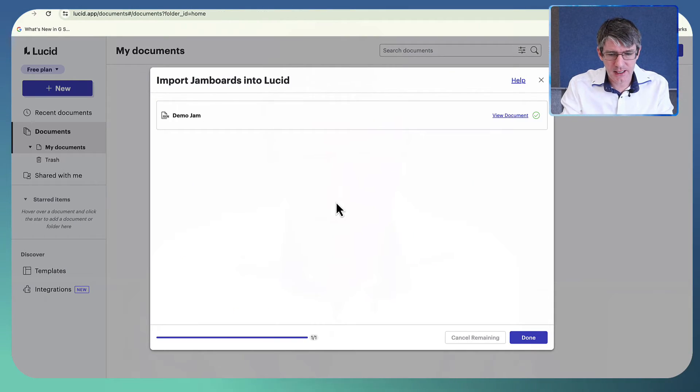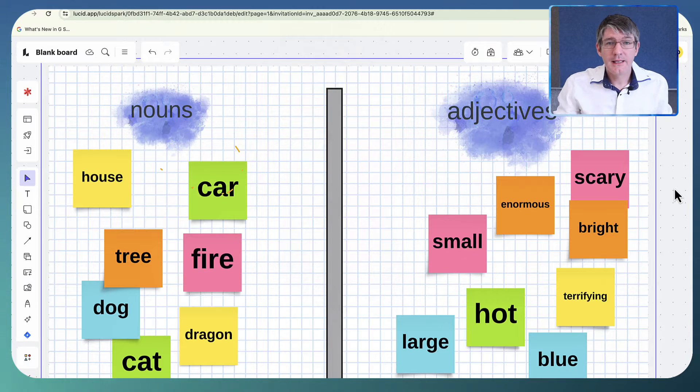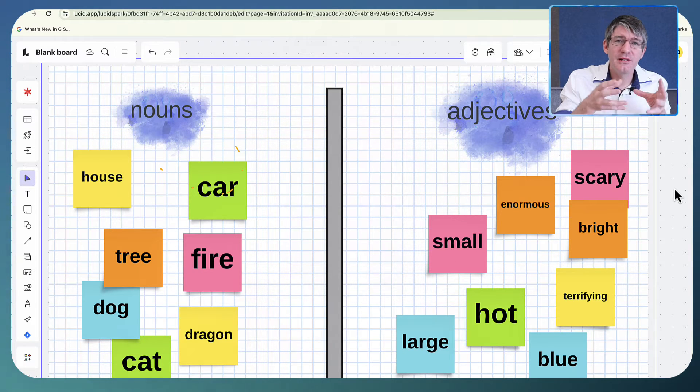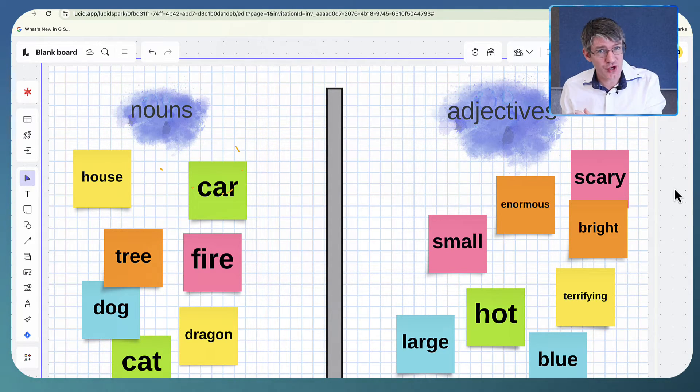Here's the original. This is what it looks like in Jamboard, Google Jamboard. And here you can see, after the import, I can click on View Documents, and here we go. This is what it looks like now in Lucid Spark after it's been converted.